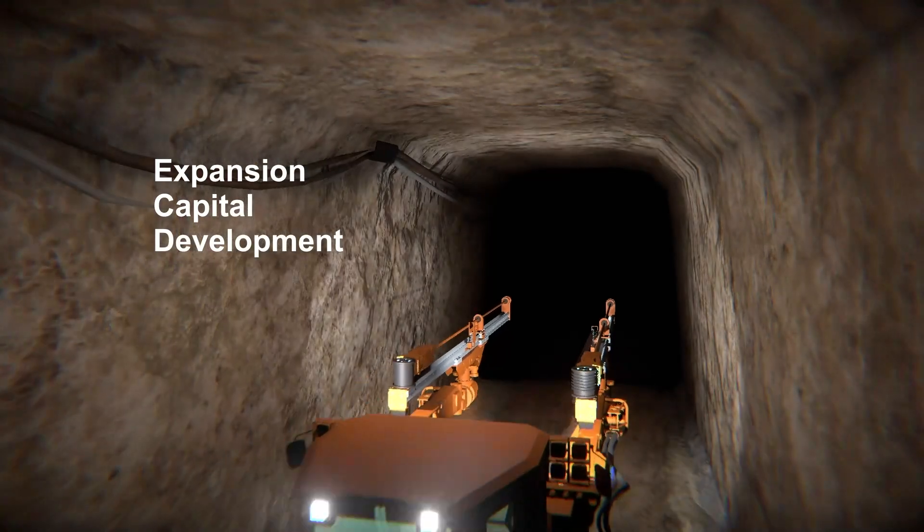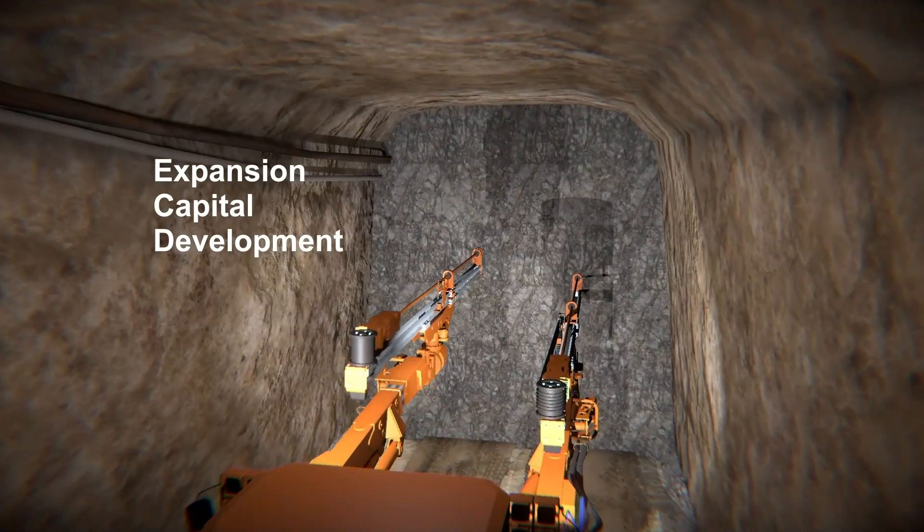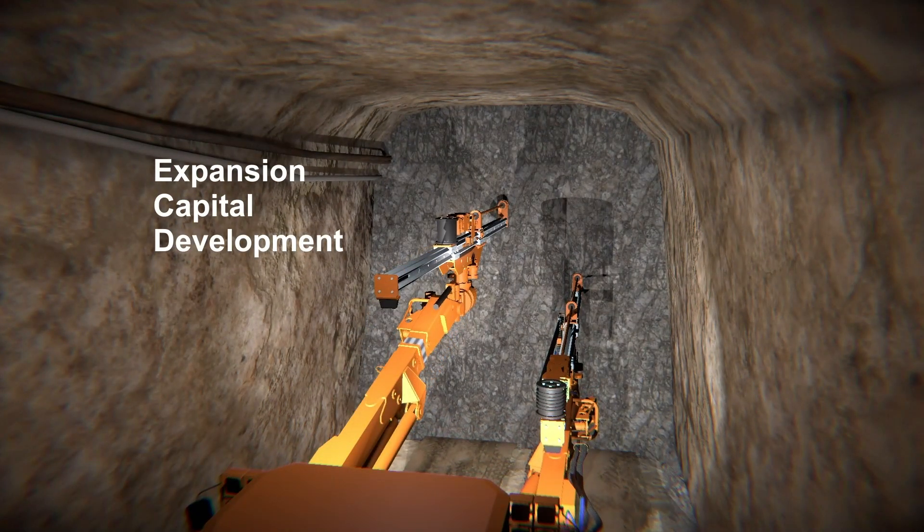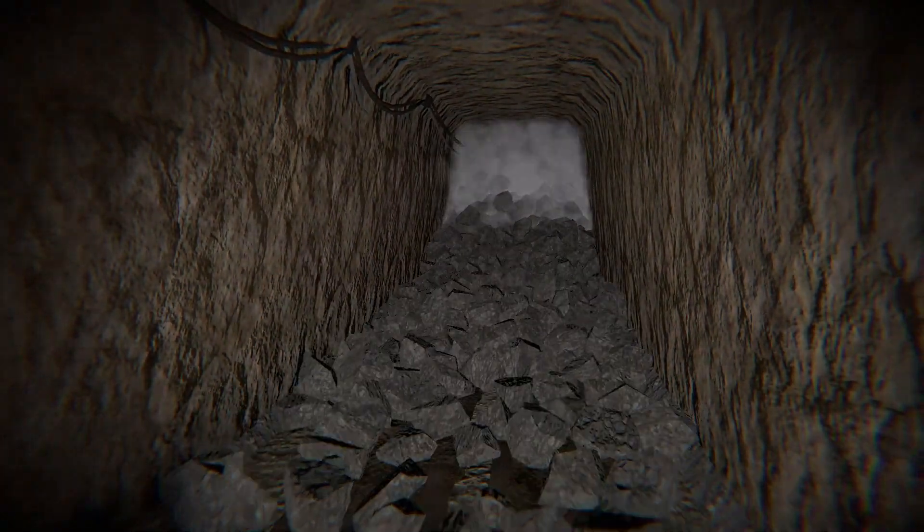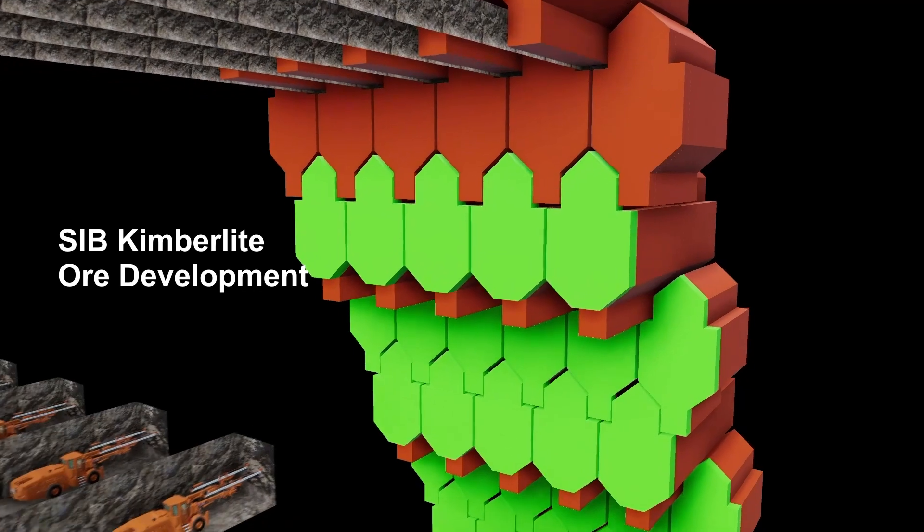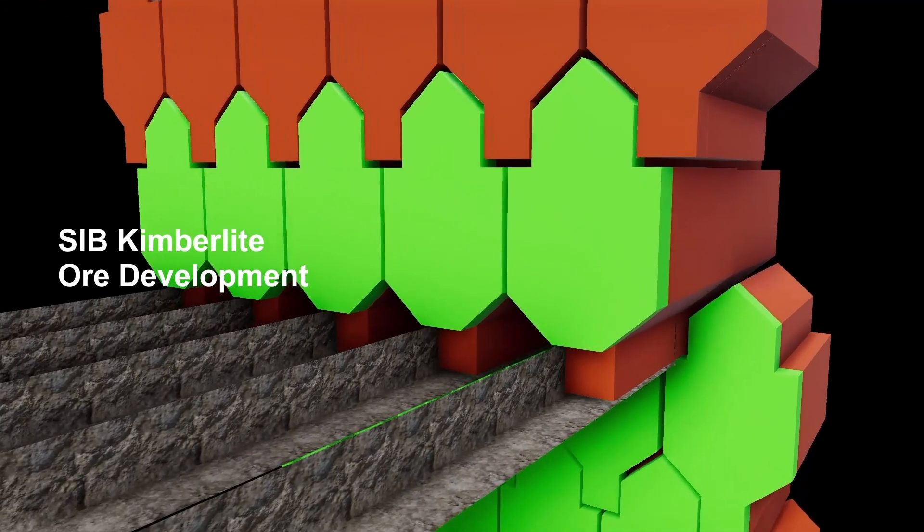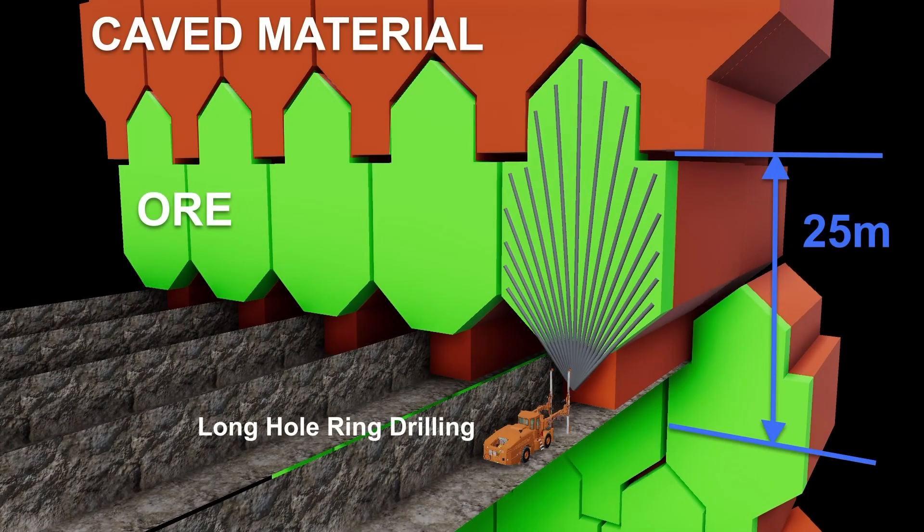Venetia underground will become the safest and most productive underground mine in South Africa. The introduction of specialist tier 1 contractor combined with a total equipment solution from Sandvik will drive a best practice underground mechanized mining system.